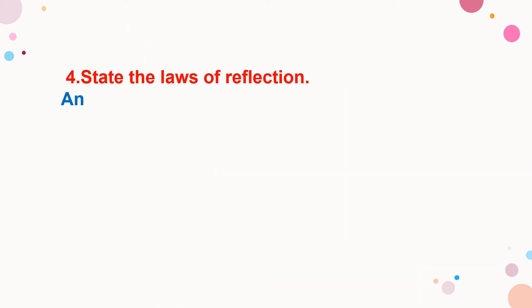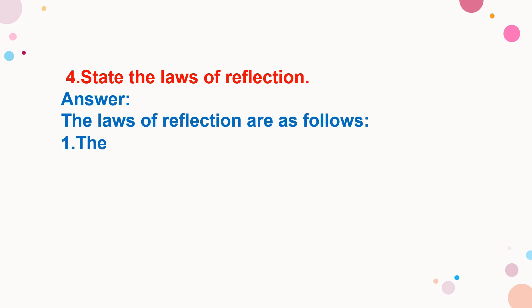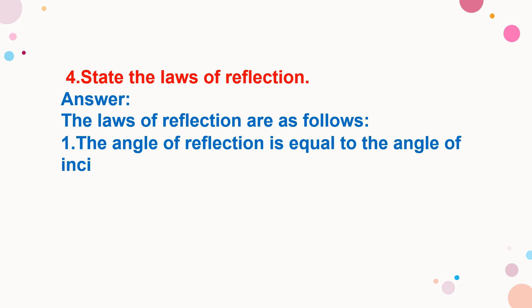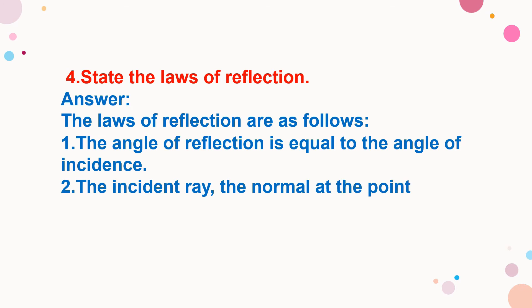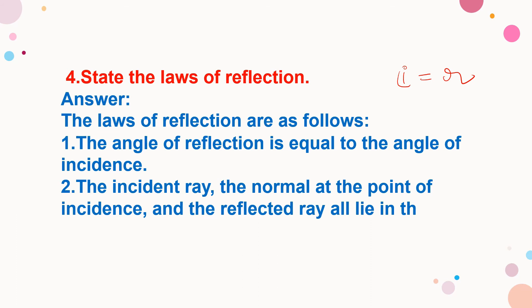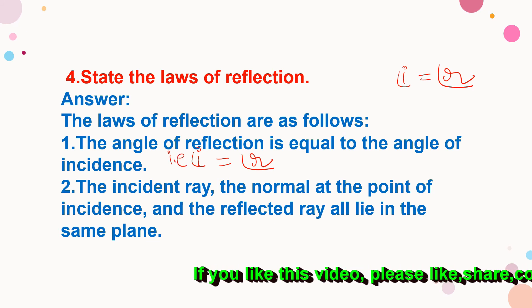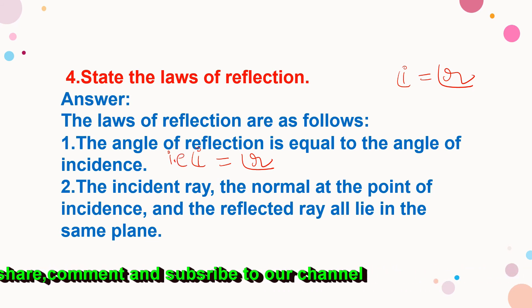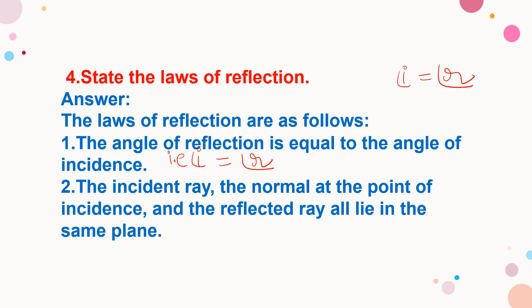Next question: state the laws of reflection. There are two laws of reflection. First: the angle of reflection is equal to the angle of incidence — angle i equals angle r. Second: the incident ray, the normal at the point of incidence, and the reflected ray all lie in the same plane.